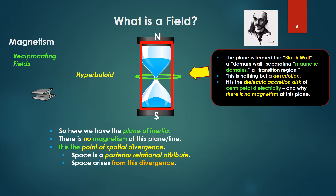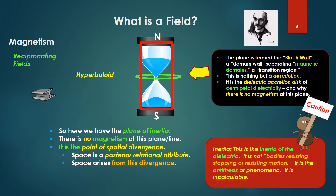Space in this framework is a posterior relational attribute arising from the divergence — the divergence from the dielectric into magnetism. A note of caution here: we're talking the plane of inertia, but by inertia, we mean the inertia of the dielectric. It is not bodies resisting stopping or bodies resisting motion as commonly denoted. It is the antithesis of phenomena such as bodies in motion, bodies moving into places. It is incalculable.